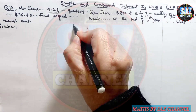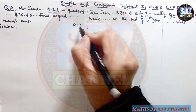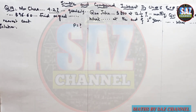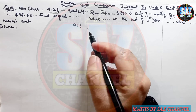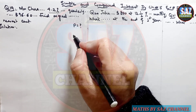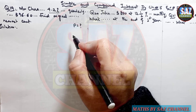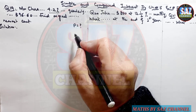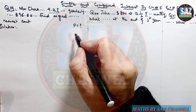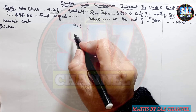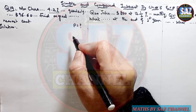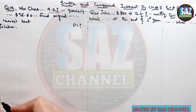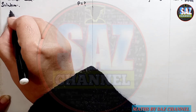In this question we have to find the principal amount. The key thing to understand is that the interest is compounded quarterly, meaning for one year there will be four conversion periods — interest is calculated after every three months. Accordingly, the rate will also be divided by four. So let's move to the solution.